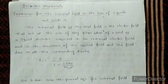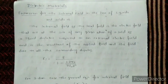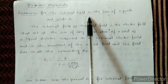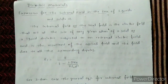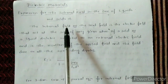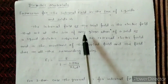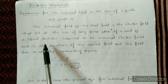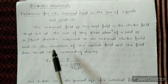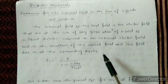Hello dear students, welcome to GCE Connect. Today we will discuss the next part in dielectric materials — the expression for internal field in case of liquids and solids. The internal field or local field is the electric field that acts at the site of any given atom of a solid or liquid dielectric subjected to an external electric field, and is the resultant of the applied field and the field due to all the surrounding dipoles.